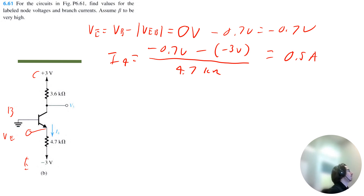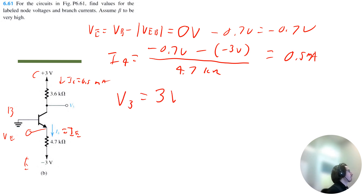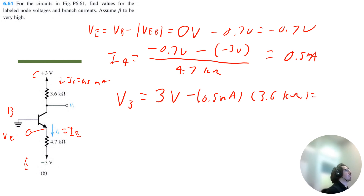Now let's solve for V3. I4 is the emitter current, and we know since beta is very high, that is also the collector current — it should be milliamps, not amps. So V3 equals 3 volts minus the collector current of 0.5 milliamps multiplied by the resistance of 3.6 kilo ohms, which equals 1.2 volts. That solves circuit B.